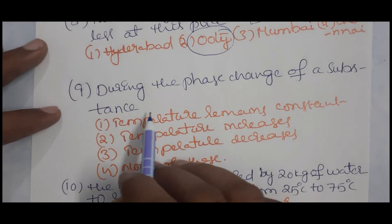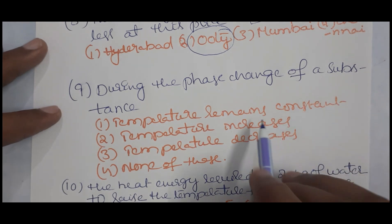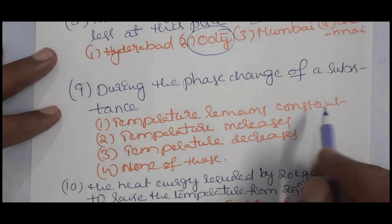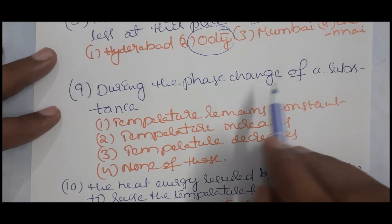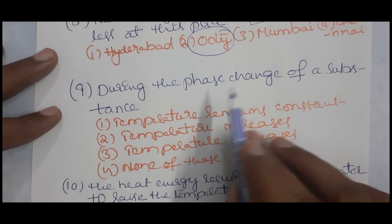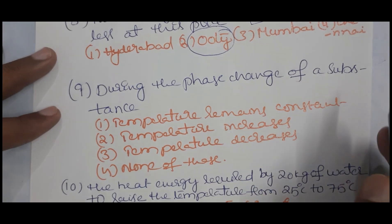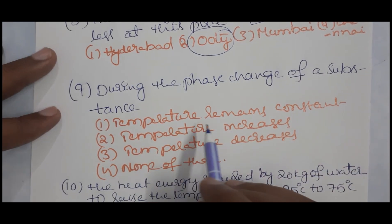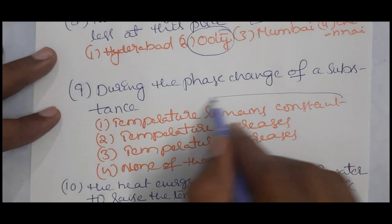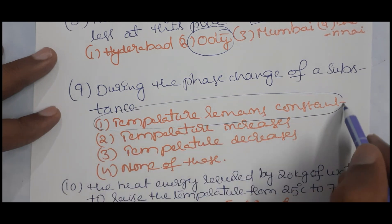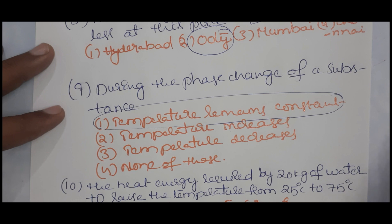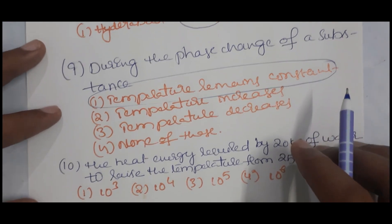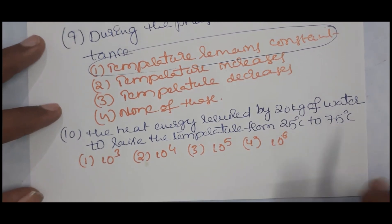During the phase change of a substance — whether solid to liquid or liquid to gas — the temperature remains constant while boiling or melting.